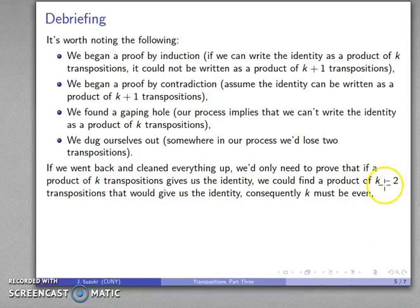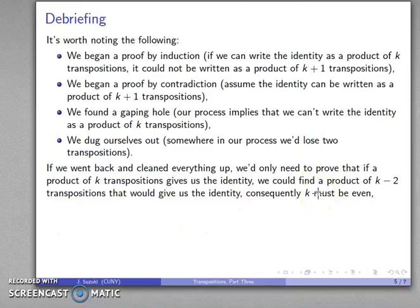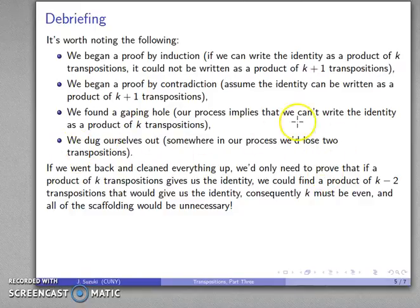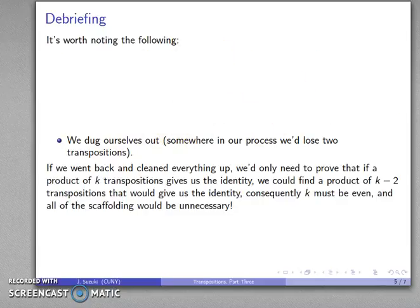Lather, rinse, repeat — I can rewrite this as a product of k minus 4 transpositions that give us the identity, and so on. That means k has to be an even number, because I'll keep knocking down the number of transpositions by 2 until I end up with 0 transpositions giving the identity, or if k is odd, 1 transposition — which is impossible. This is the only important thing I need to prove, and all of the other scaffolding is actually unnecessary.